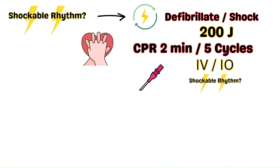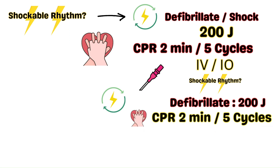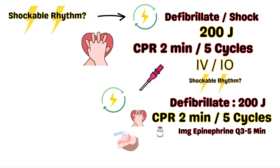Is it shockable? If it is shockable, defibrillate at 200 joules and resume CPR for two minutes. If it has not yet been given, administer one milligram of epinephrine every three to five minutes. Epinephrine, due to its mechanism of action, is thought to help improve cerebral and coronary perfusion. If an advanced airway is not in place, consider placing an ET tube.